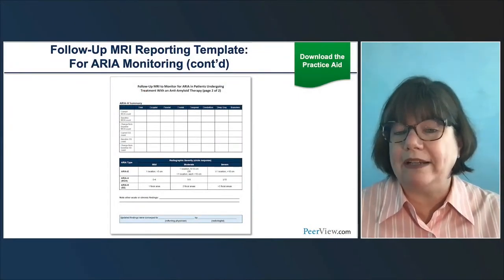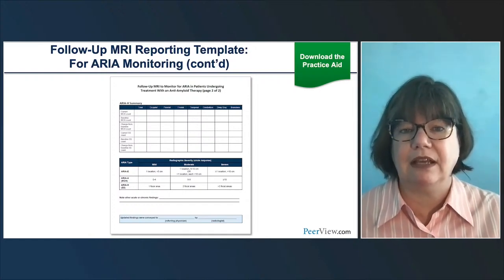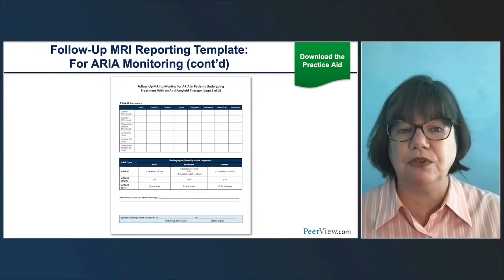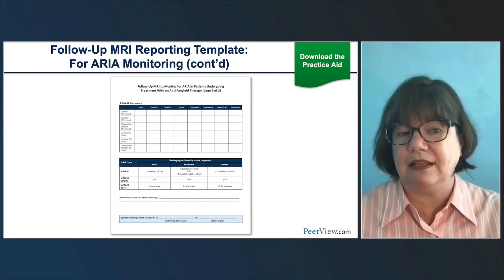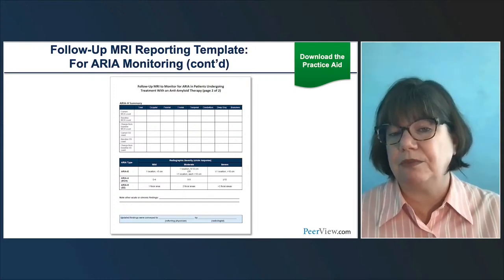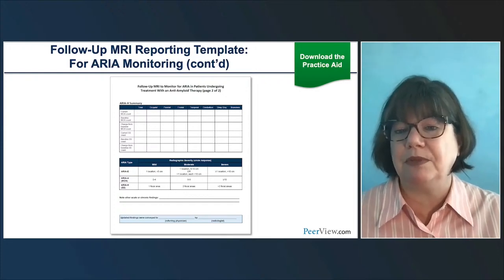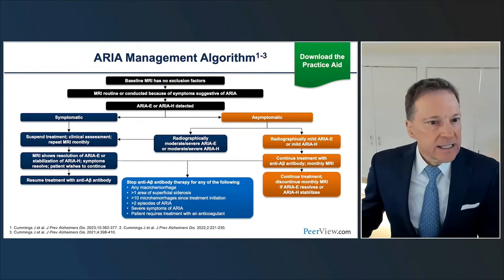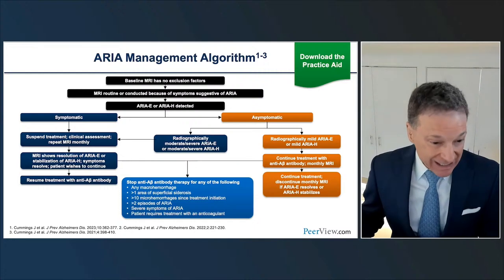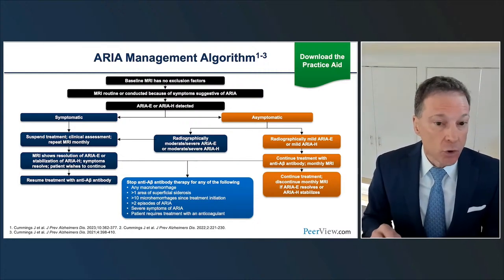There are also some quantitative tools available. Many vendors now have these in progress, including some under FDA review, that can really help you identify these findings and track them sequentially. There are also some CPT codes available that may help with reimbursement for these. We expect this is going to be a growing area in the future. Now, let's take a moment to look at the ARIA management algorithm.